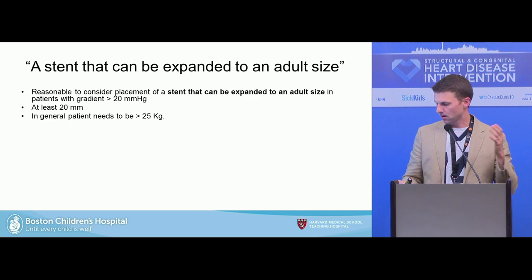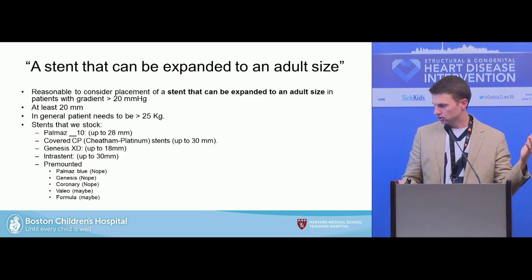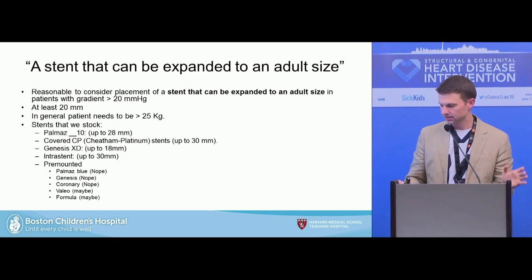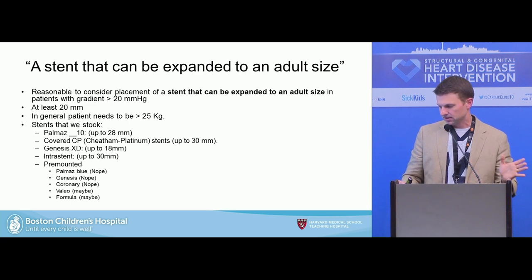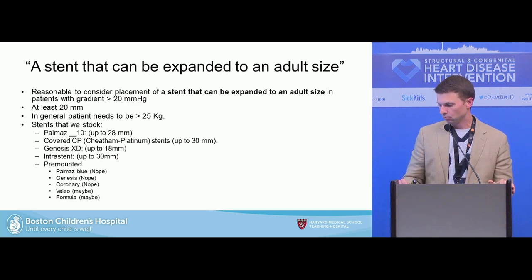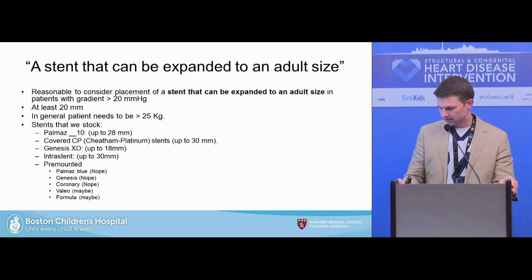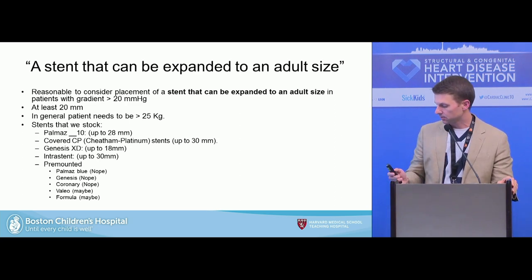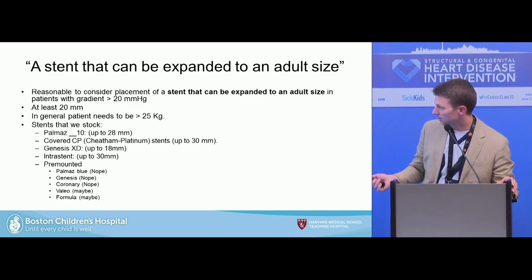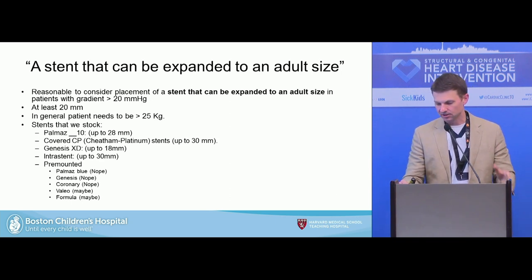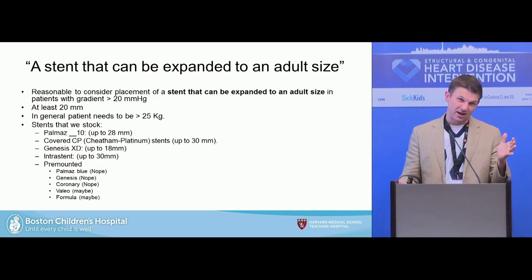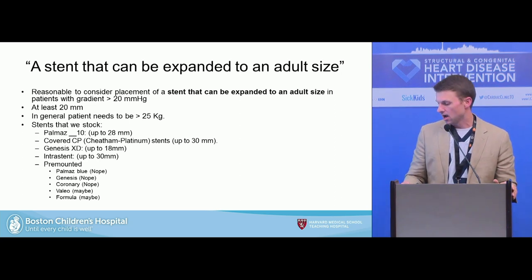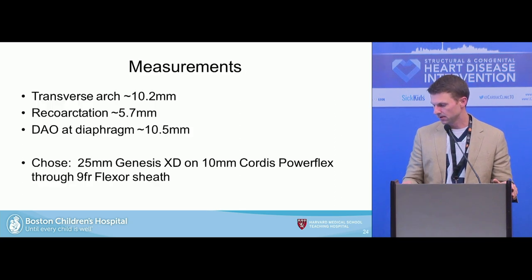In a pediatric lab, stents that can be dilated to adult size should have a length of at least 20 millimeters. Generally, you can place these stents in patients above 25 kilograms. What we're stocking are the Palmaz series, covered CPs, Genesis XT, and Intrastent — with pre-mounted stents only for emergencies. Palmaz Blue, Genesis, and coronary stents can't get to adult size, so you'll be stuck trying to fracture them later or having them surgically removed. The Vallejo and similar may get there depending on the patient.